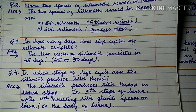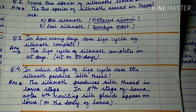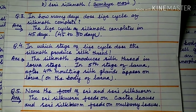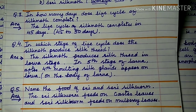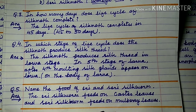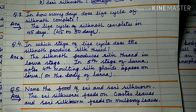Question number 5: Name the food of Eri and Seric silk moth. The Eri silk moth feeds on castor leaves and the Seric silk moth feeds on mulberry leaves.